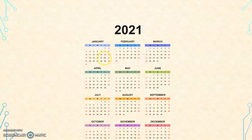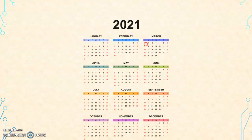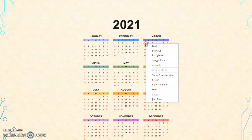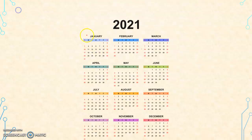Moving forward, you can see a calendar here for 2021. There are 12 months in a year: January, February, March, April, May, June, July, August, September, October, November, and December.